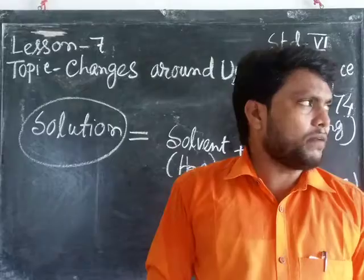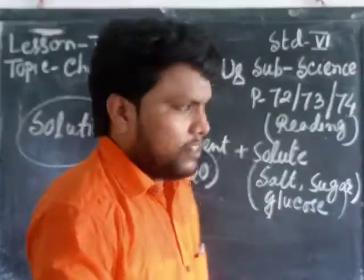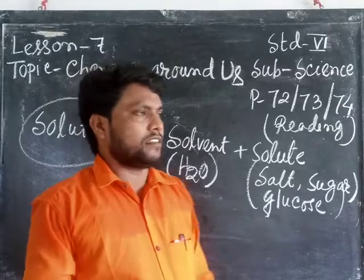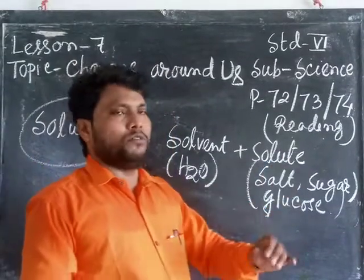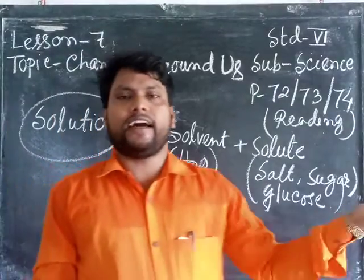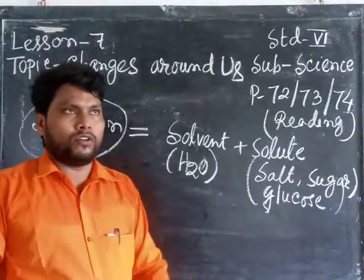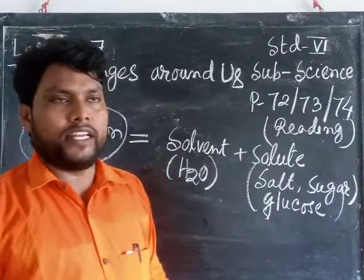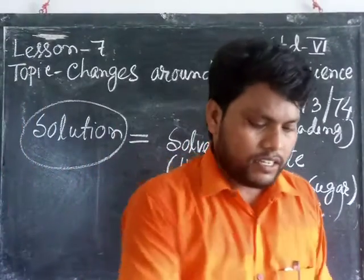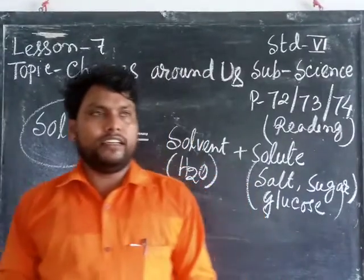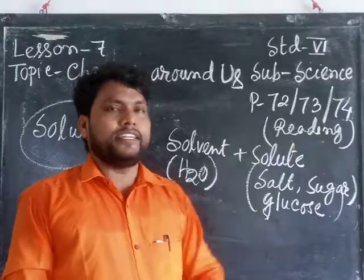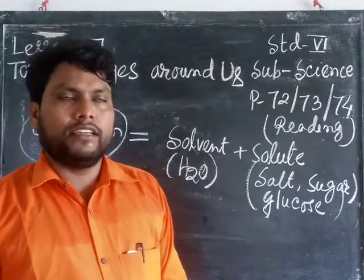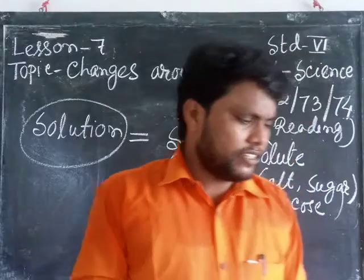That means sugar plus water makes a sugar solution. Sometimes we need some heat. Suppose the quantity of the solute is taken in a higher amount — the solute does not want to mix with the solvent. So you will apply heat. After two or three minutes, the solute will gradually be dissolved with the water. When you make tea in the kitchen, you do this type of change.